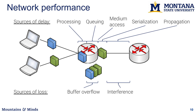Then there's serialization delay — writing the bytes of a packet onto the link one by one, like pronouncing a sentence takes time. After that comes propagation delay — how long it takes for a byte to traverse space to reach a destination. The absolute limit is the speed of light in vacuum, but typically we're transmitting radio through atmosphere, light through fiber, or electricity over wire.